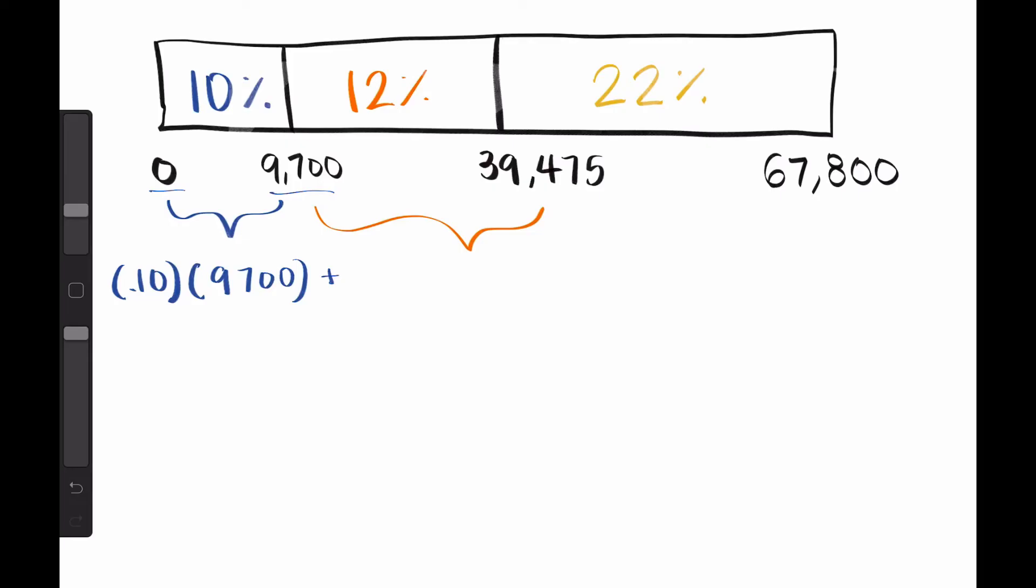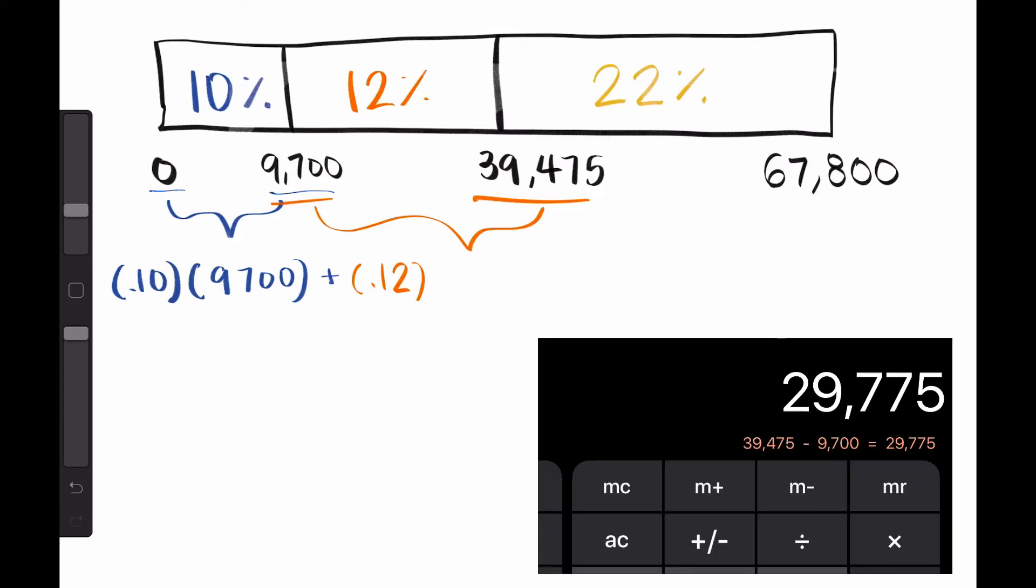Next, 12% as a decimal is .12 times the difference in the next bracket, 39,475 minus 9,700, which is 29,775.